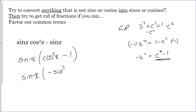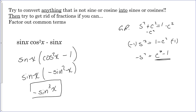So we have sine x times negative sine squared of x. We simply multiply those together to get negative sine cubed of x, and that is our final answer. You would leave it like that — you can't simplify it any further.